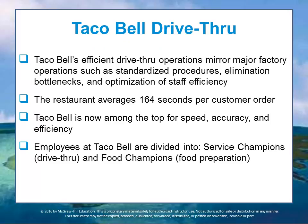Taco Bell's efficient drive-thru operation mirrors many major factory operations. It uses standardized procedures, eliminates bottlenecks, and optimizes staff efficiency. The restaurant actually averages 164 seconds per customer order from the time the customer arrives to departure, with an assembly line of food items to construct six different types of wrappers that detail procedures on every step of the process. Taco Bell is now among the top in speed, accuracy, and efficiency in these kinds of services.